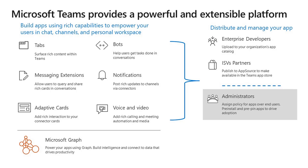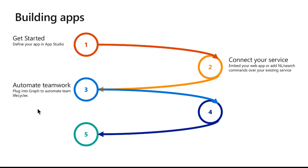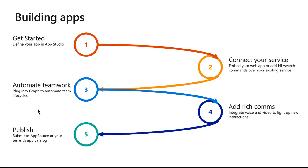Let's look at what it takes to actually start building an app. The first step is to use our tool, AppStudio, to get started and define your application and all of its capabilities. You'll then connect your existing service, whether it's a bot or a tab. You can use our Graph APIs to automate teamwork as a third step. Next, you can use our voice and video APIs to add rich communications. And lastly, publish that app either to AppSource or to your organization's app catalog.